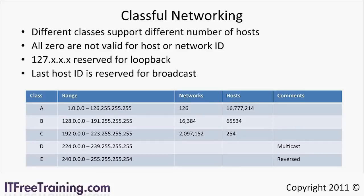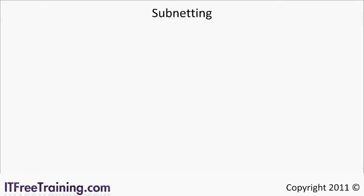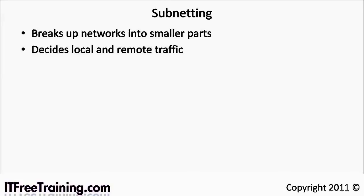Using classful networking by itself creates a lot of wasted IP addresses. In order to use the address space better you can use subnetting. Subnetting allows you to break up a network into smaller parts. It is also used to determine which traffic is local traffic and which traffic is for remote networks. Unfortunately, once you start subnetting your network you will need to start working in binary.